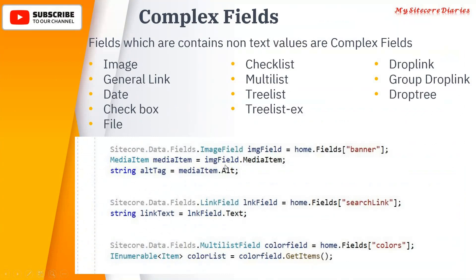For an image field, for example a banner image, you use the namespace Sitecore.Data.Fields.ImageField to cast it. This gives you a complex object, and from that you can get a MediaItem and then retrieve properties like the alt tag. Similarly, for a link field, you cast it as a LinkField to get a complex link object from which you can get the value.